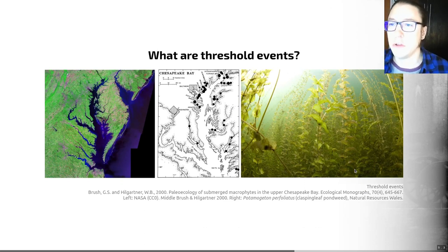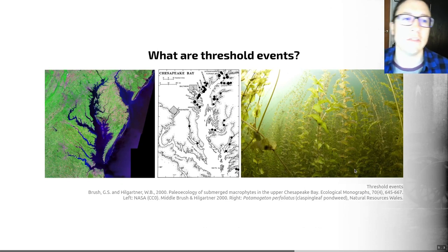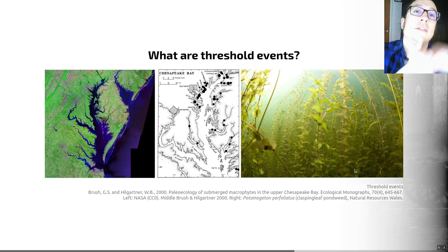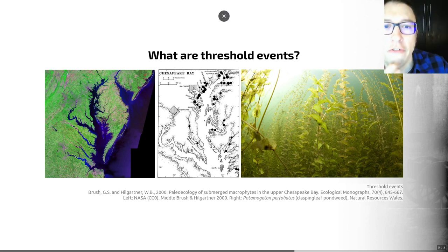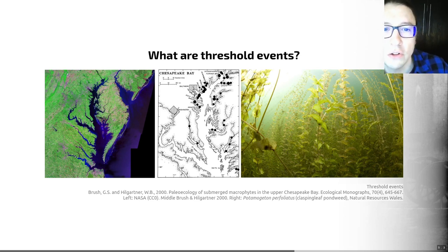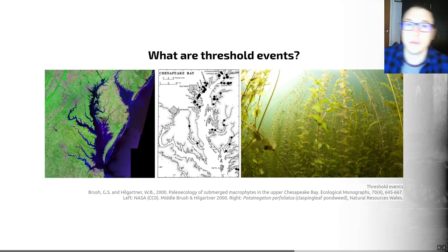The first example I want to introduce is the idea of a threshold event. A threshold event is a sudden change in the state of an ecosystem, sometimes after a prolonged period of stability, often in spite of sustained or intensifying stress in the recent past. So you stress an ecosystem and not much happens, and then suddenly you get a switch in ecosystem state. Fossils provide a long-term perspective important for studying these, and allow us to identify the nature of threshold events in the past. A nice example comes from a paper by Brush and Hill Gardner from 2000.